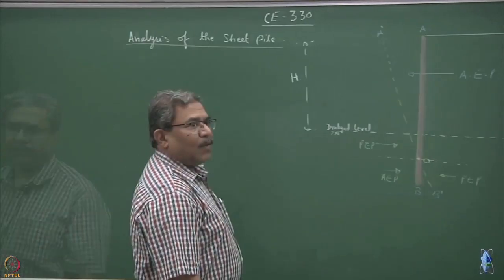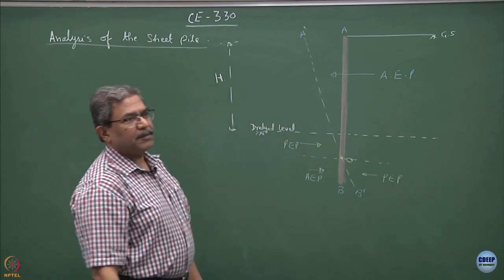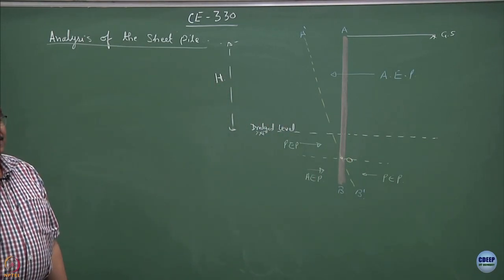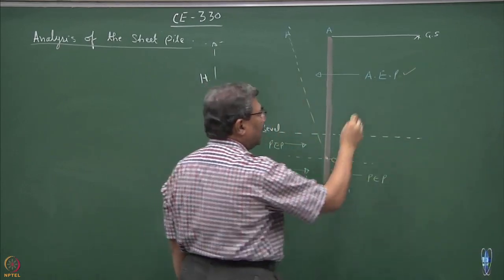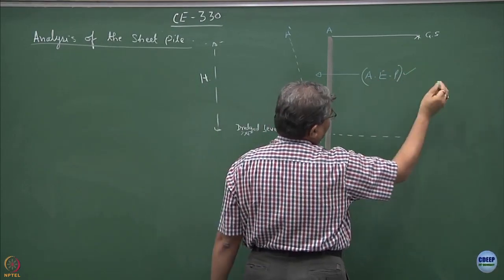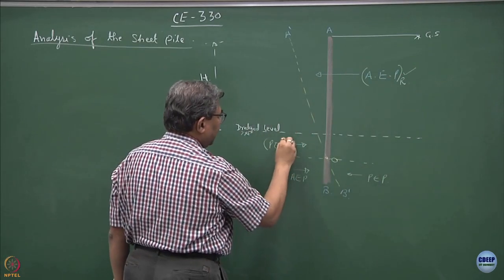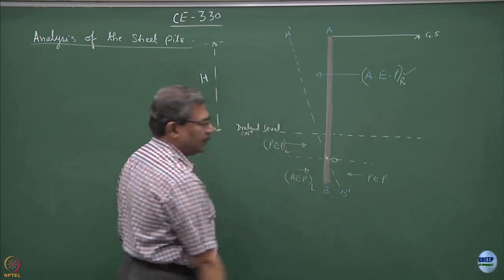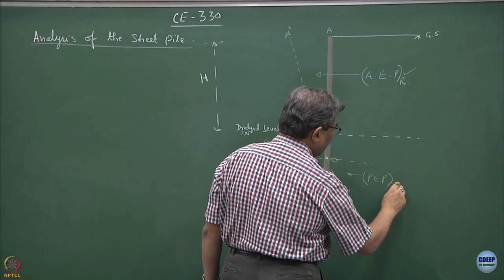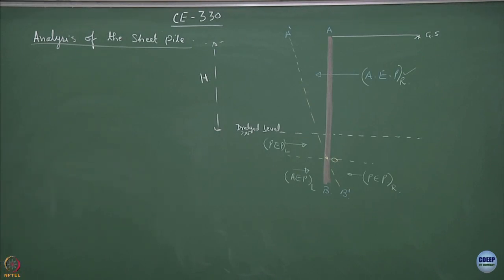Is this part clear? When rotation is taking place about point O, the net pressure at point O will be zero. We can compute AEP on the right-hand side and PEP on the left-hand side, as well as active earth pressure on the left-hand side and PEP on the right-hand side. You have to compute these pressures, draw the free body diagram, and from that we will start doing further analysis.